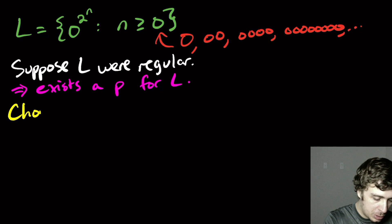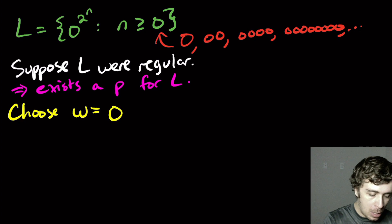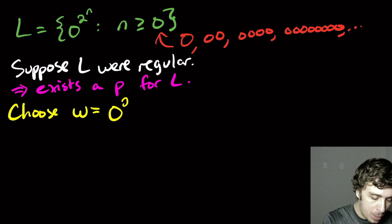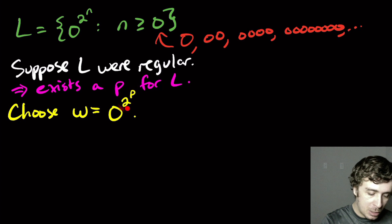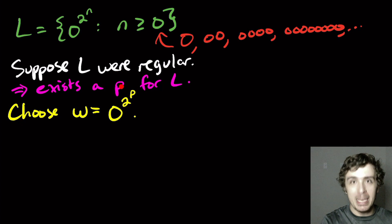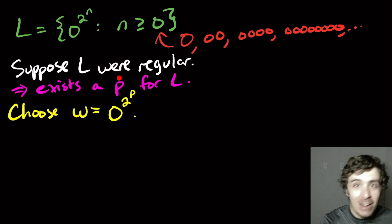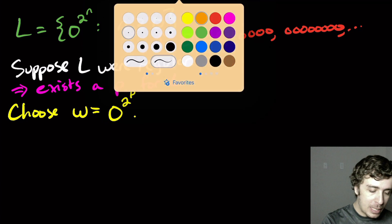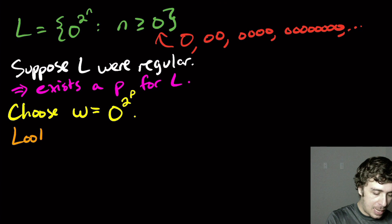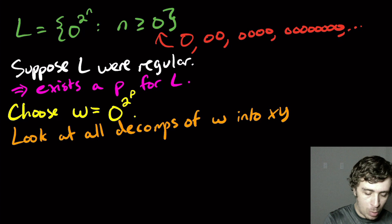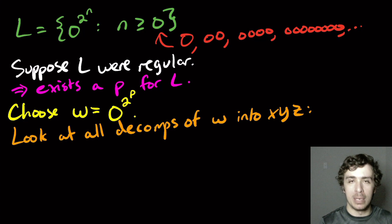So let's choose some string W. The usual convention is to place the P wherever there's the variable in the exponent. So here I'm going to put two to the power of P. Two to the P is definitely at least P, so that's no problem. And this is in the language because I just substituted the variable in. So what we need to do then is to look at all decompositions of this string W into X, Y, and Z according to the rules.